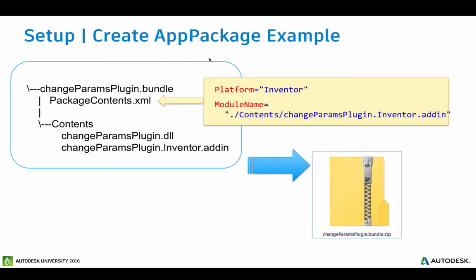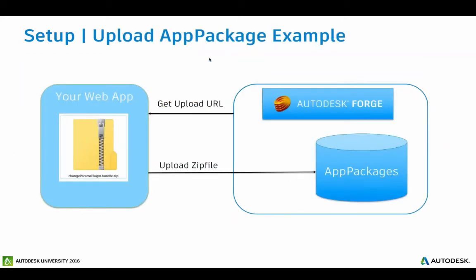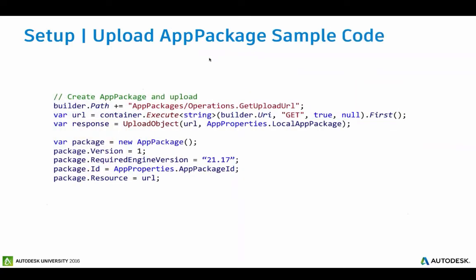In your web app, you will ask Forge to get a URL to upload your app package, and your web app will then upload the app package zip file into the app package repository on Forge. Looking at a little bit of C# code: this is basically connecting to the Forge endpoint to get the upload URL, uploading the object, and specifying what the app package version is. This is the design automation v2 API — as we go forward, we're looking at simplifying the engine interfaces a bit in the app package management.